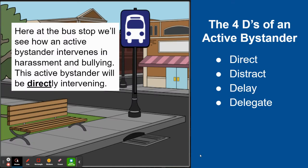Here at the bus stop, we'll see how an active bystander intervenes in harassment and bullying. This active bystander will be directly intervening. The four D's of an active bystander are direct, distract, delay, or delegate. But we're going to spend time today on just that first one — direct.